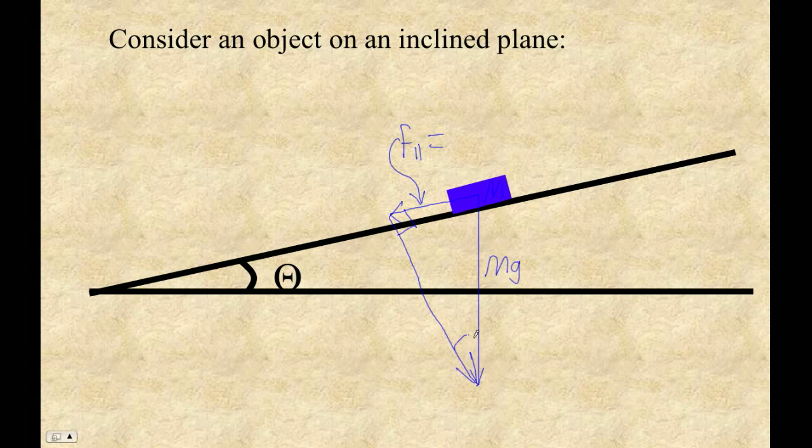These angles here are congruent, that angle and this angle. So that side there is the opposite side. This is the hypotenuse, which is mg times the sine of the angle.